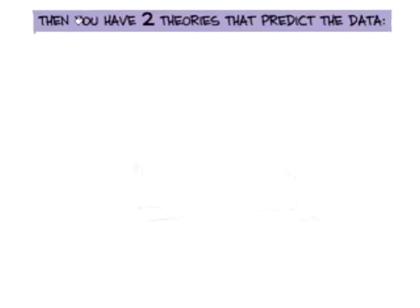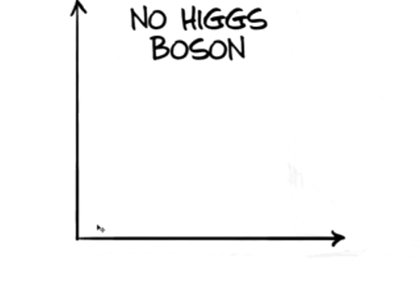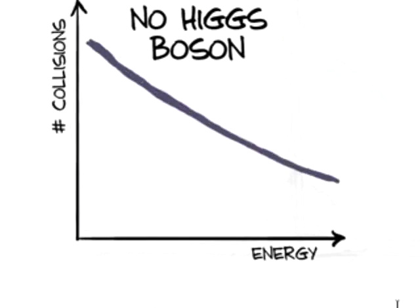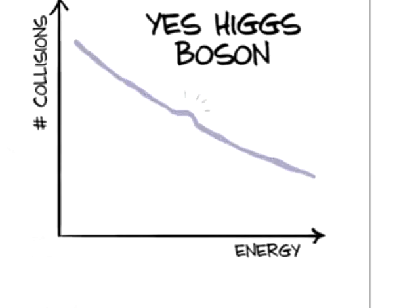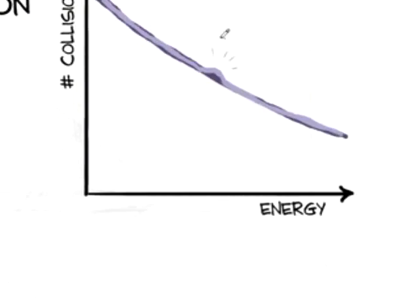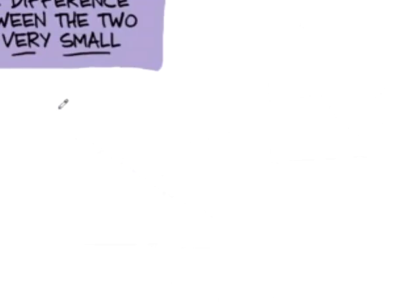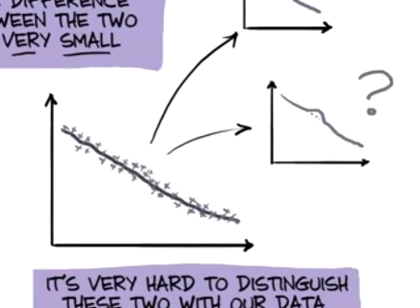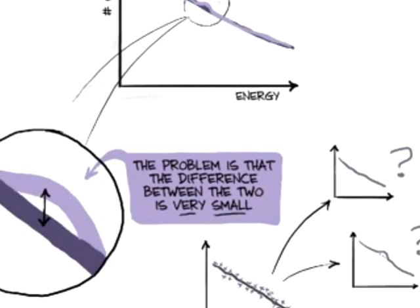And then you have two theories that predict the data. One says, I'm going to predict there's no Higgs boson, so the data should follow along this line. And the other is, I'm going to predict that plus a Higgs boson. And the problem is, the difference between these two theories is very small. And so it's very hard to distinguish these two with our data. Because the predicted effect is tiny. If the predicted effect were huge, it would be very easy to tell the difference between with Higgs boson or not with Higgs boson. But the predicted effect is tiny, and so it's really hard to see.